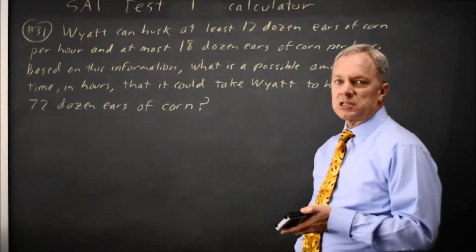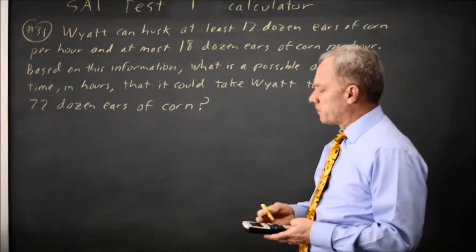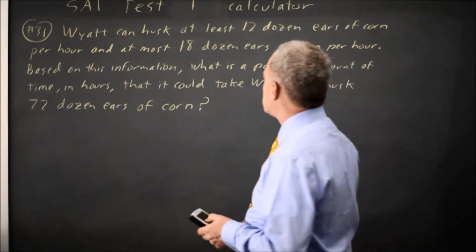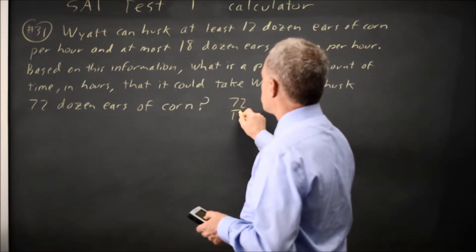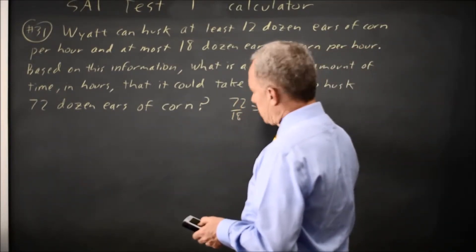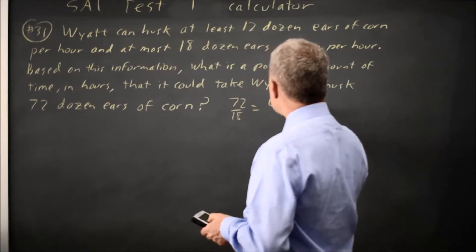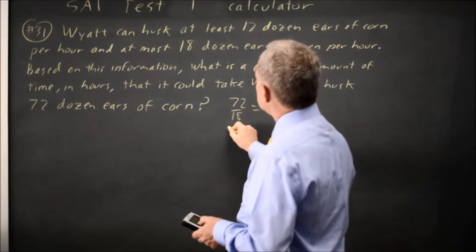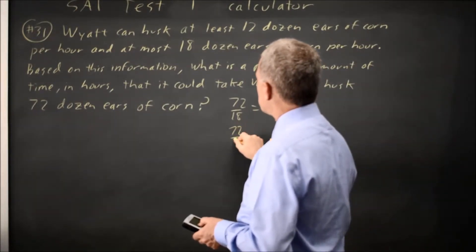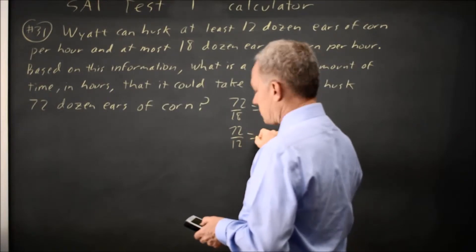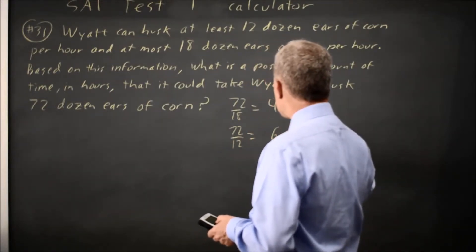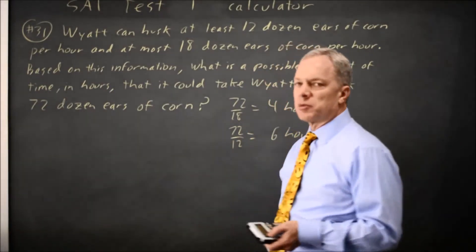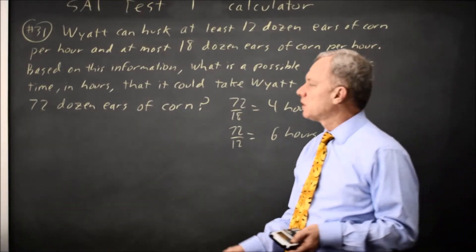If I take 72 over 18, I get 4 hours at the fastest rate. If I take 72 over 12 at the slowest rate, I get 6 hours. So any number between 4 and 6 would work.